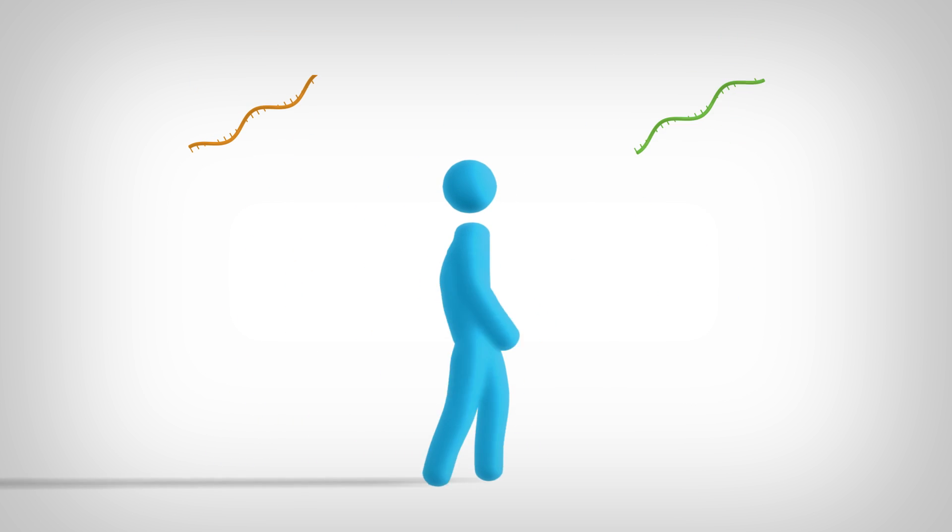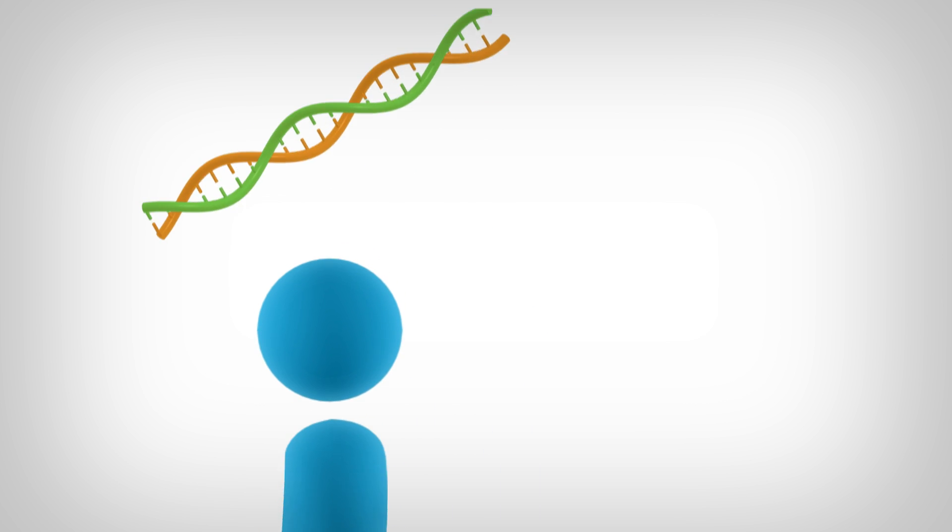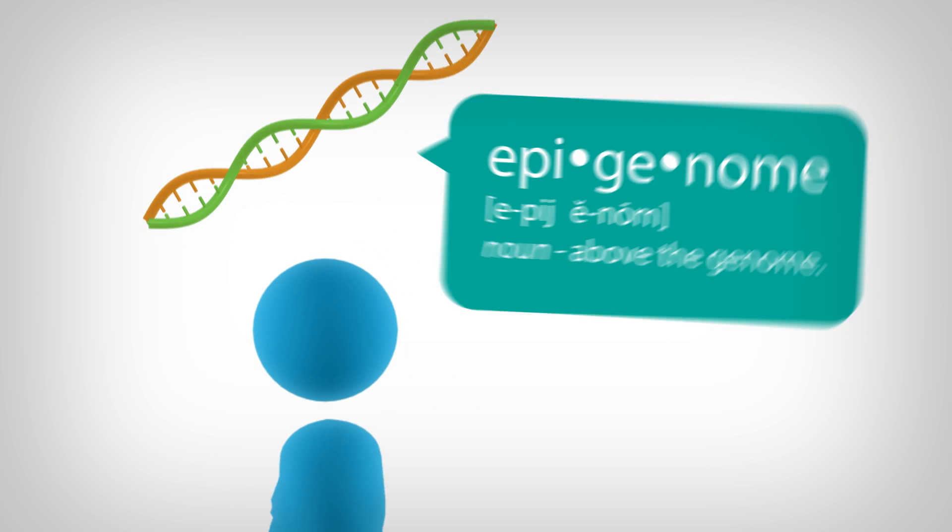This is the story of you. Who you are started with DNA inherited from your mom and dad. Your DNA makes up your genome, the genetic blueprint that makes you you. Turns out there's a higher level of complexity called the epigenome.